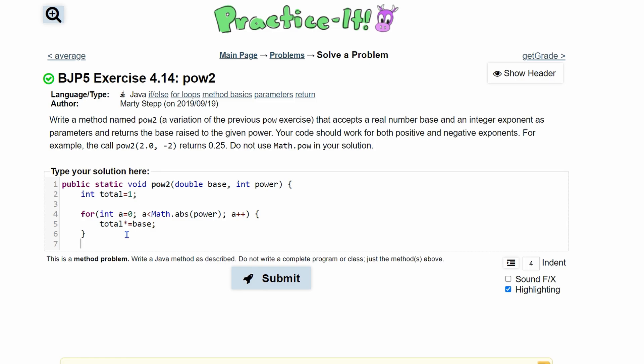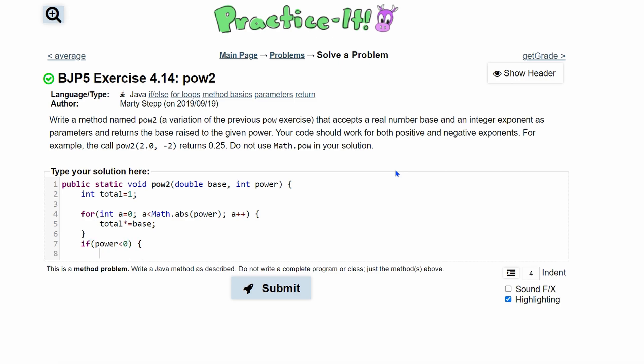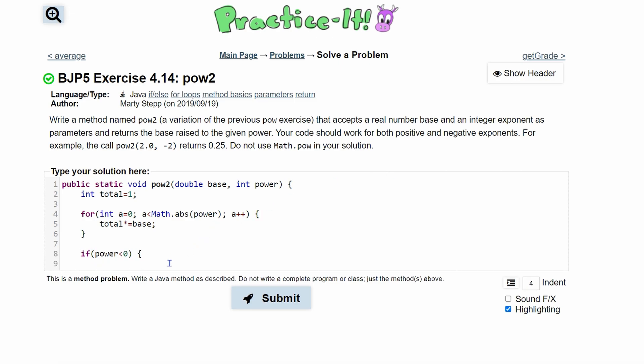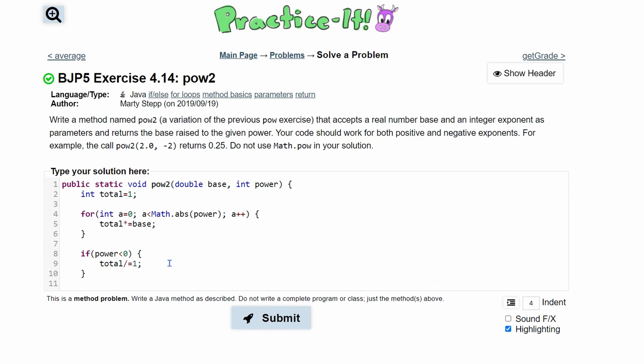Since we have to deal with negatives, though, and negatives mean basically we have 1 over our answer. All we need to do is say if our power is less than 0, we are going to be inside of here. So if our power is less than 0, that means total is going to be equal to 1 over our total, or we can just say divides equal to 1. We can end this, and that's it for this method.